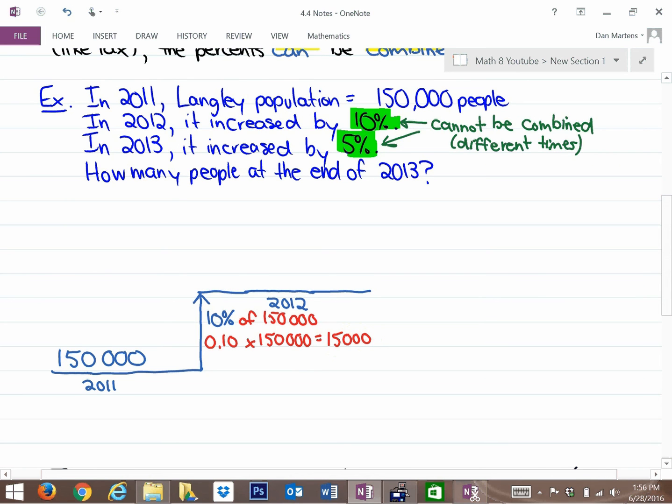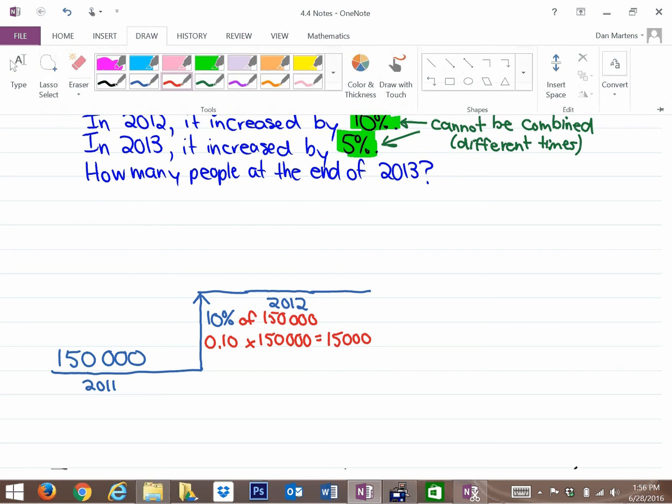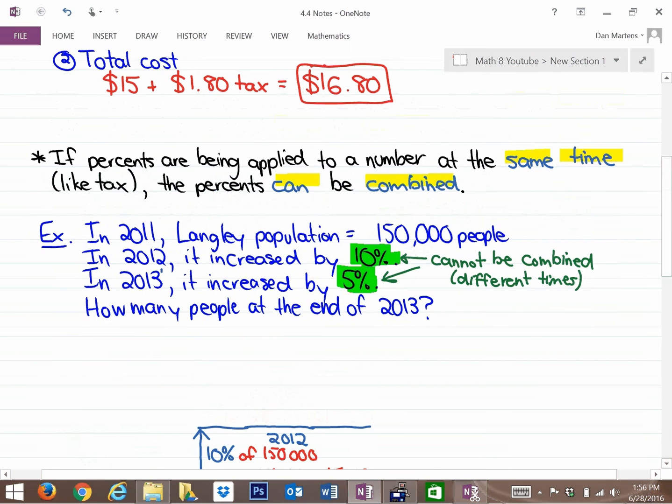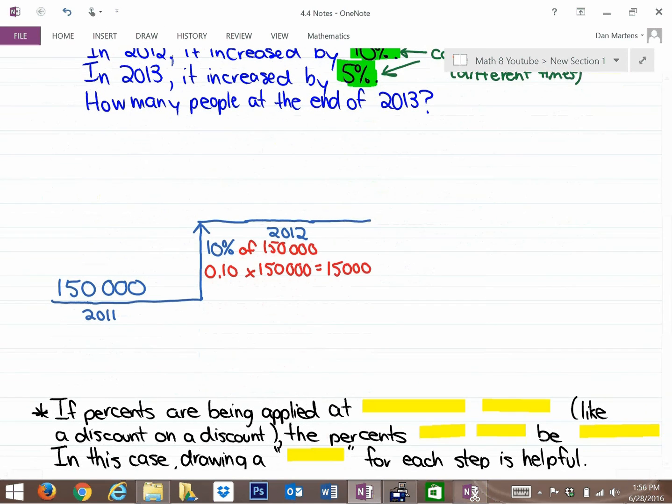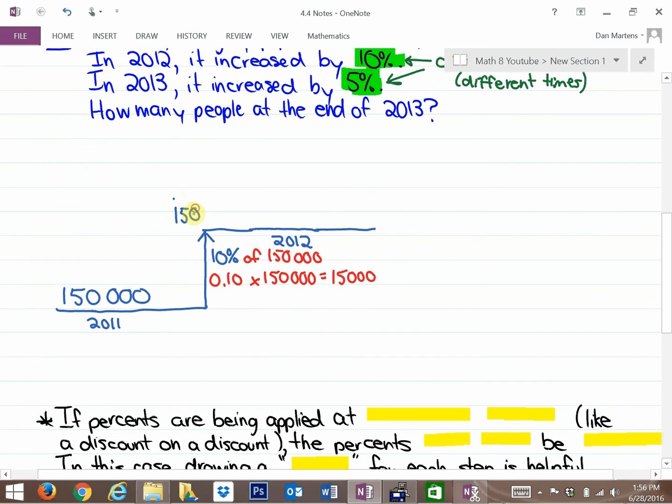The population in 2012 is not 15,000, that's the increase. The population in 2012 is the initial 150,000 plus the 15,000, which equals 165,000 people. And that's in 2012. Sorry, this is a little bit messy here at the moment and boggled up.